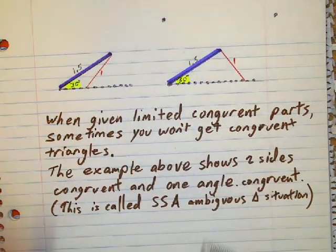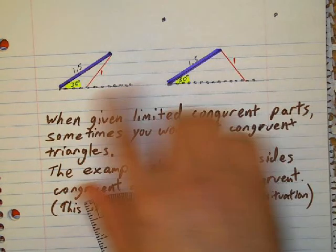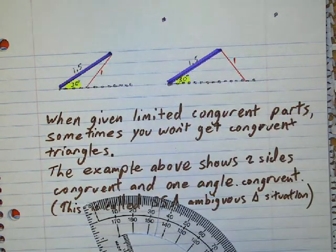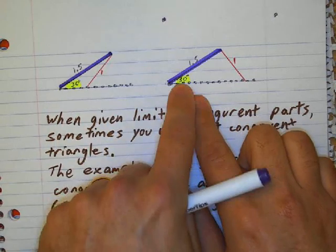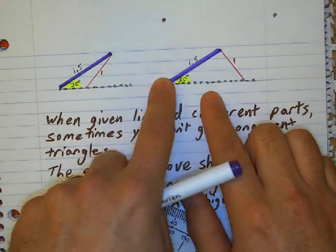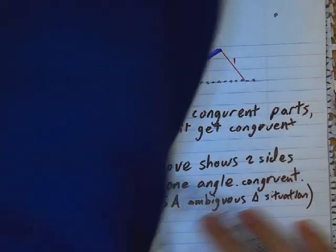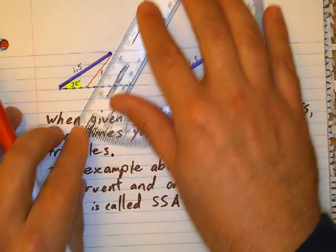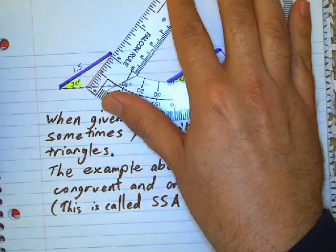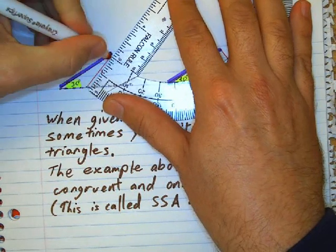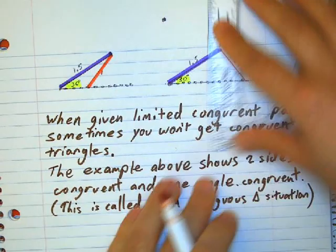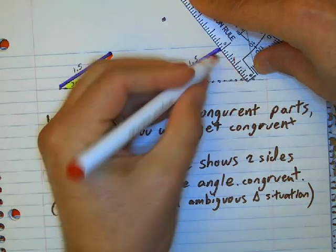And so then I've got my angle and my side relationship. So this angle is congruent to this angle. This side is congruent to this side. Now, if I'm told that this here is one inch, I could go here and then I could say, I've got one inch here. But here I could go one inch here also.